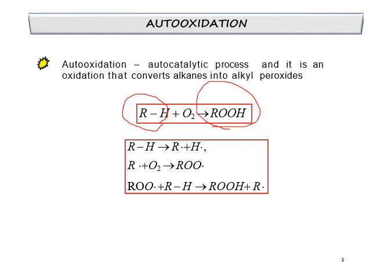If you look at the chemical reaction, alkane is oxidized and produces alkyl peroxide. The first step is initiation, and these two must be the propagation, in which this one is oxidation of radical R. And then the radical will react with alkene to produce the alkyl peroxide.